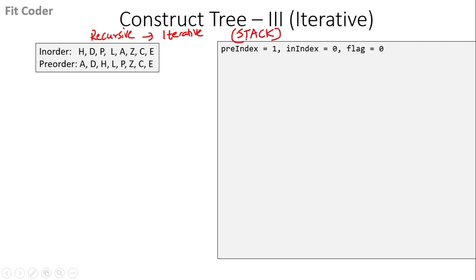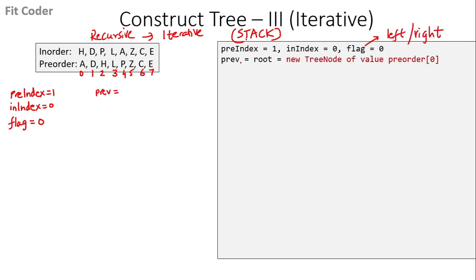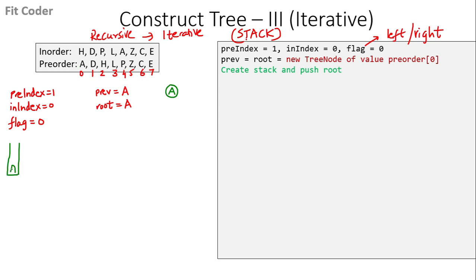We keep a few variables: pre-index, in-index, and flag. Pre-index keeps the index for the pre-order traversal, in-index for the in-order traversal, and flag is used to decide the left or right part. We also keep variables previous and root, both set to a new tree node of value pre-order[0], which is A. We create a new node with value A as the root, then create a stack and push the root node A into it.